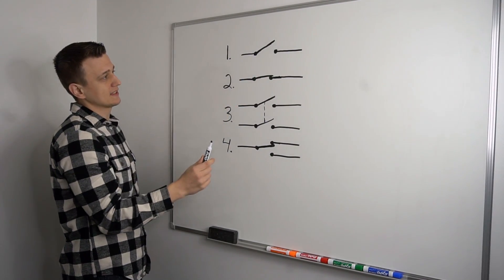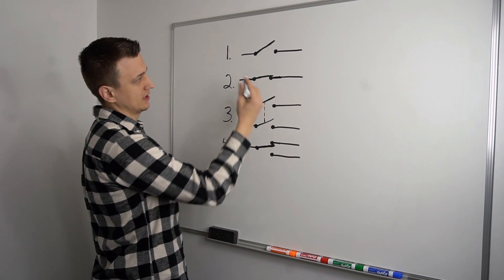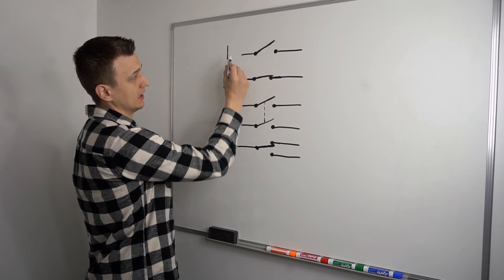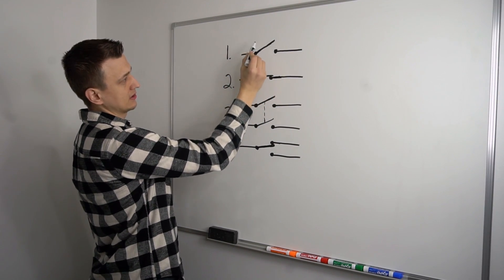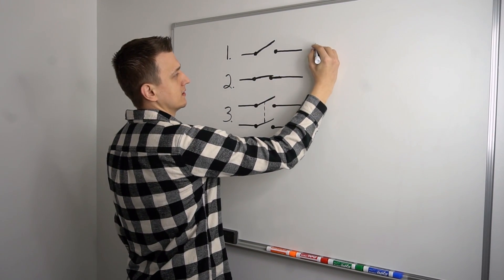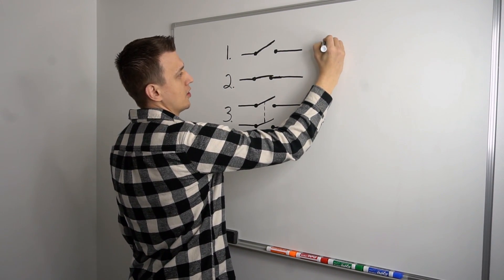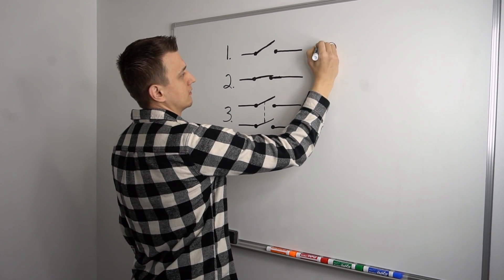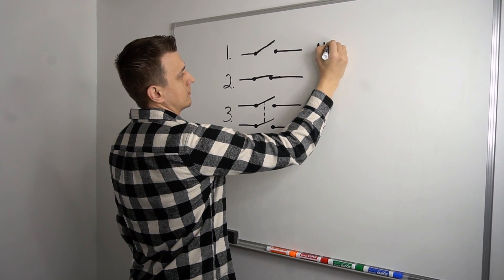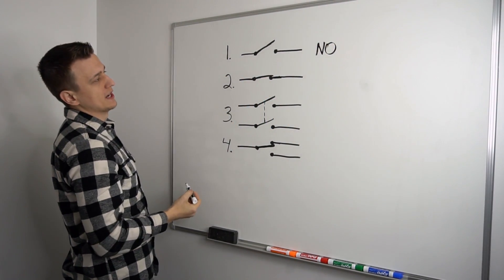So this right here is a basic symbol for a switch. And there can be many different kinds of switches. This particular symbol is a normally open, or basically NO, a normally open switch.